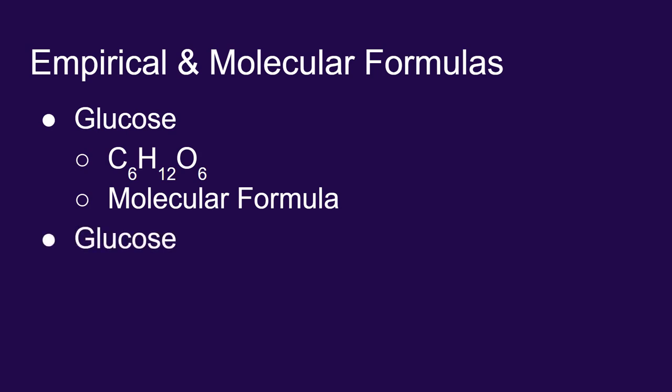There is another formula for glucose that we could share. We could share what's called an empirical formula. For glucose, the empirical formula is CH2O. As you can see, the empirical formula doesn't tell us the whole story. It does tell us which elements are present in glucose, but it doesn't tell us all of the atoms that are present.